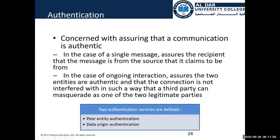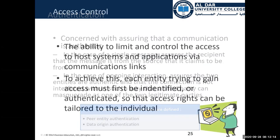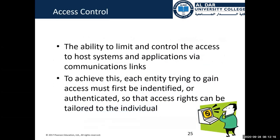We also talked about authentication. Authentication means making sure the source of data is authentic — for example, if Ahmed sent me a message, I know it is from Ahmed and not somebody else. Access control has three levels: the first is authentication, the second is authorization, and the third is accounting.